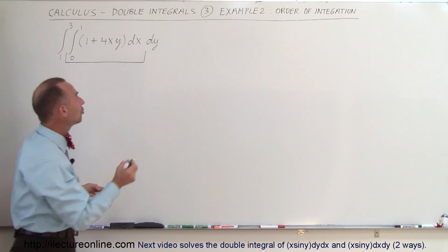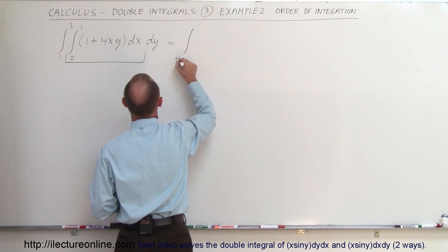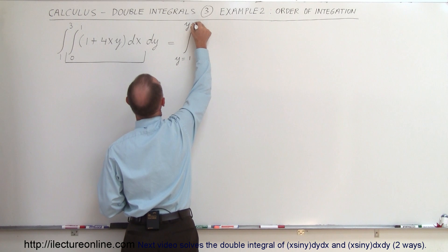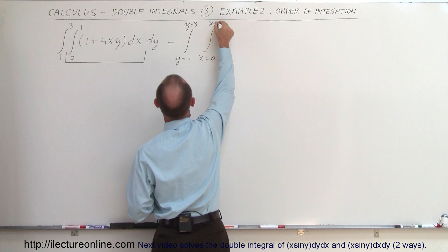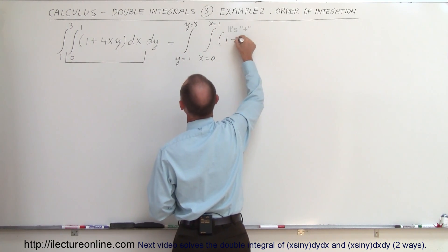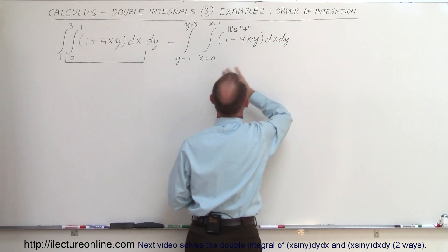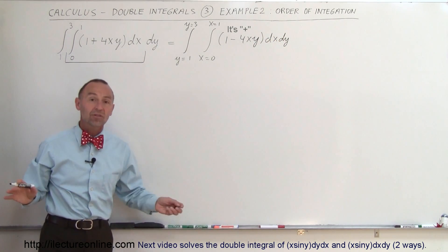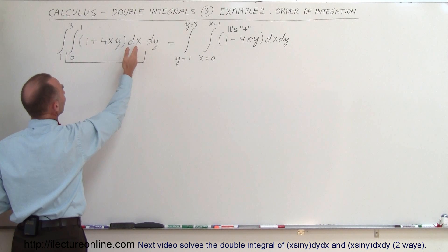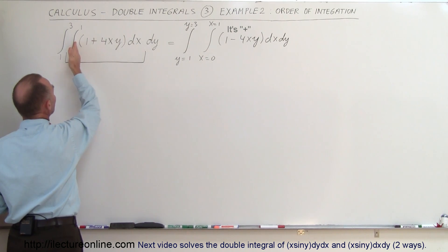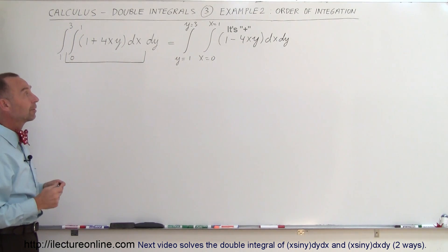Sometimes to prevent confusion we could write it explicitly: the integral with y limits from y equals 1 to y equals 3, then the second integral sign from x equals 0 to x equals 1, then 1 minus 4xy dx dy. Most textbooks just use the convention that the first differential is associated with the last integral sign, the second differential with the first integral sign, and so forth for three integral signs.